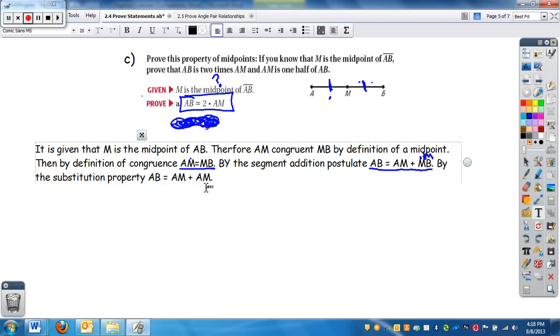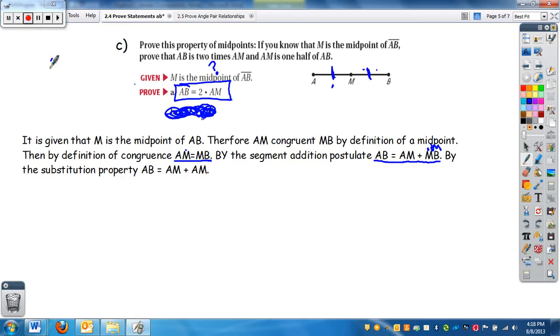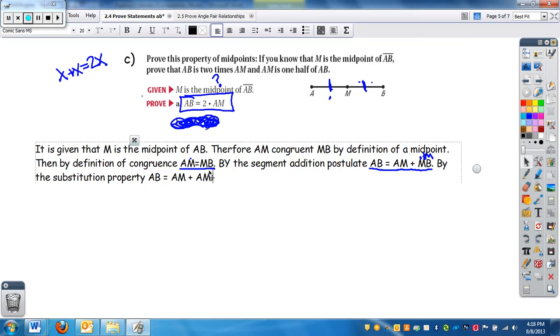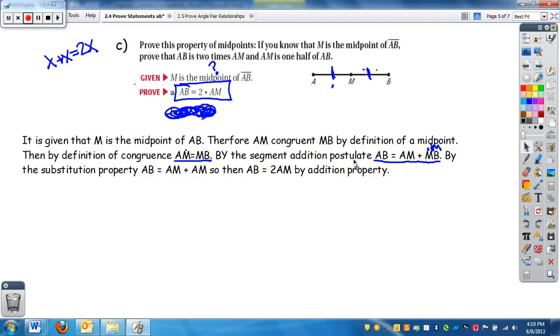So I can go back to my proof. I'm replacing, replacing means substitution. By the substitution property AB equals AM plus AM. I replaced MB by AM. Well, anytime you have two times each other. So if you think of, kind of going, if you have X plus X, this means you have 2X. So if I have AB plus AB, that means you have two of them. So then, AB equals 2AM. And that is kind of just your addition property.